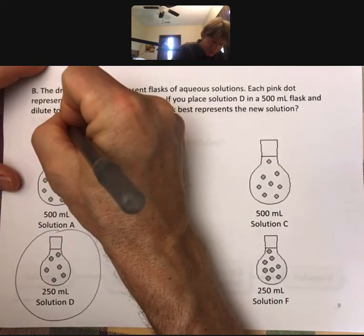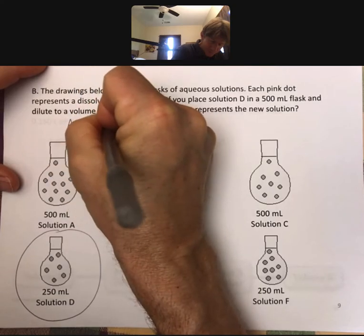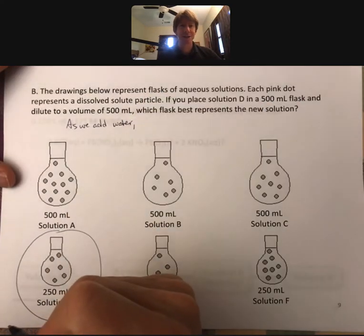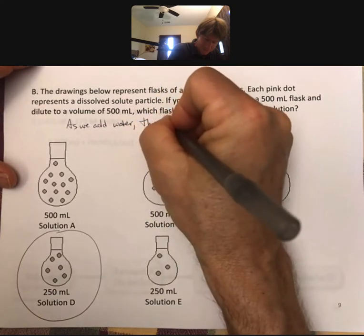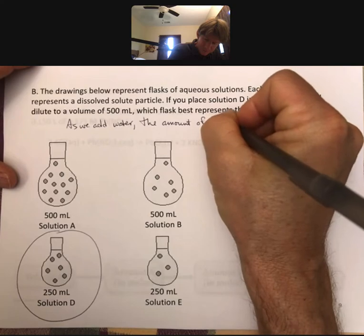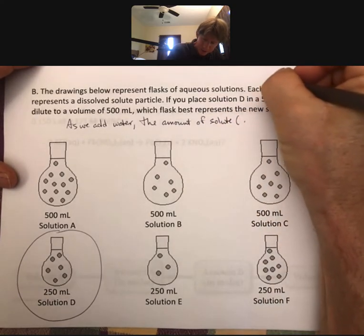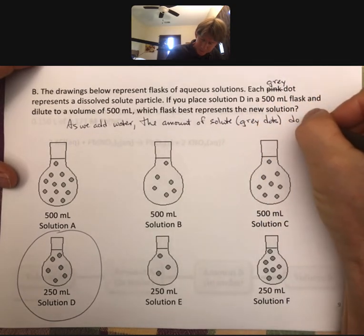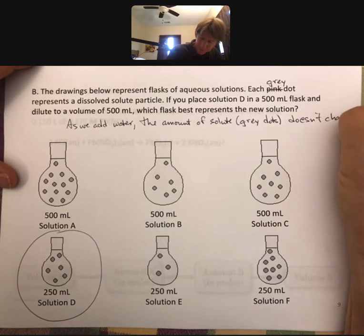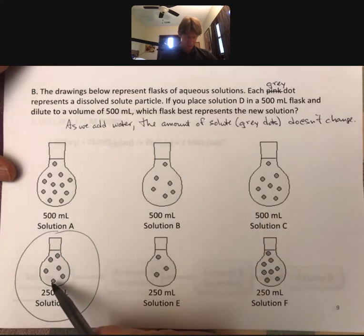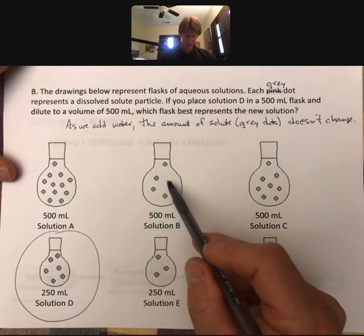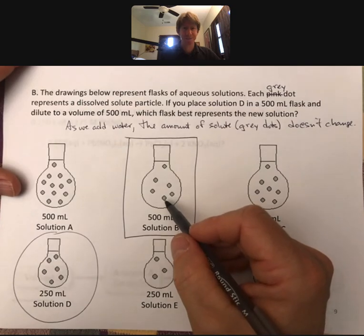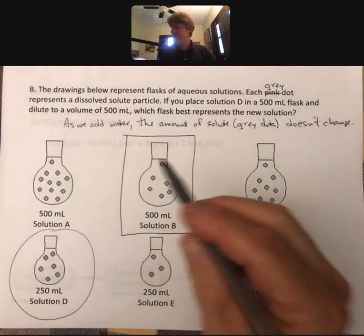As we add water to go from 250 to 500 milliliters, the amount of solute does not change - and those are the gray dots - doesn't change. So we have six dots down here, we should still have six dots up here. And this one will be our answer. And that's a little bit more about the conceptual nature of concentration.